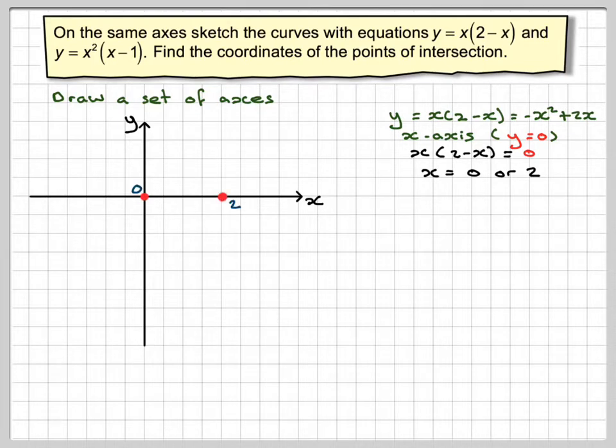This is a sketch, so it doesn't have to be done accurately. For the y-axis, x = 0, and I can see very clearly if I put x = 0 in this, that y is going to be 0, which is a point I already have.